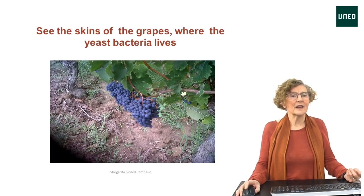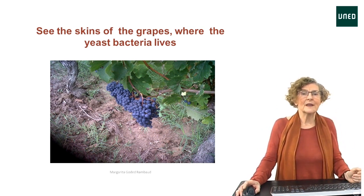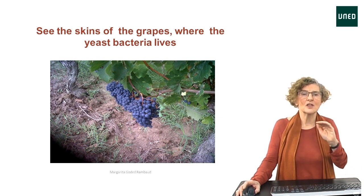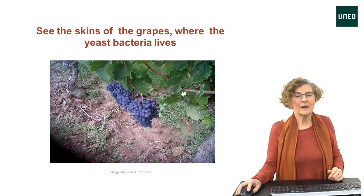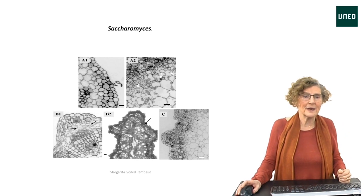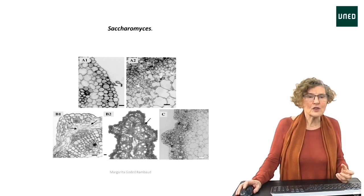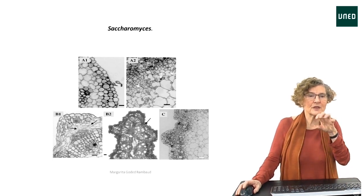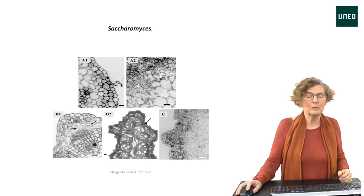Look at this new slide — see the skins of the grapes where the bacteria lives. Notice the whitish layer on the grapes; this is exactly the yeast. The bacteria it contains is what will change the must into wine. Let's have a look at a microscopic photograph of the yeast bacteria — it shows how the yeast bacteria get together in round or roundish forms.